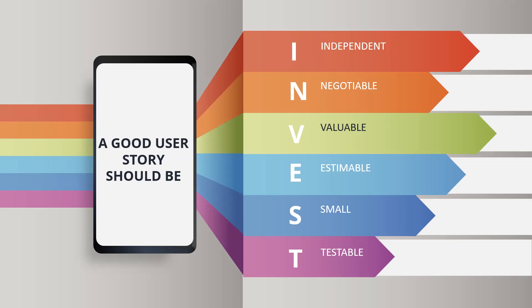The final point is Testable — it should be testable for completion and sign-off. After the work has been done, it will need to be tested, and the story should have the ability to be tested when the work is completed. So a good user story should be Independent, Negotiable, Valuable, Estimable, Small, and Testable.